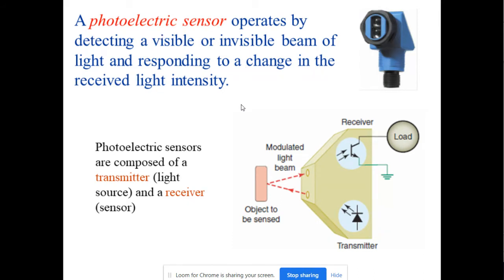This is the other type of photoelectric sensors. It operates by detecting visible or invisible beam of light and responds to the change in the receiver of light intensity.